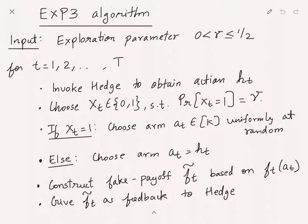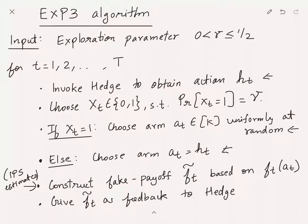Going back to the EXP3 algorithm: we invoke Hedge, which gives us action h_t. With probability gamma, we choose an action uniformly at random; with remaining probability, we choose h_t. Then we construct the fake payoff vector f_t tilde using the IPS estimate, which depends on f_t(a_t). We give f_t tilde as the feedback vector to Hedge. This describes the complete algorithm.